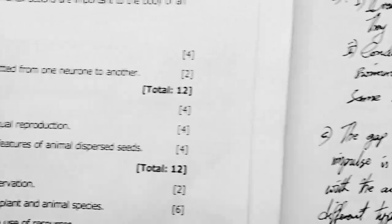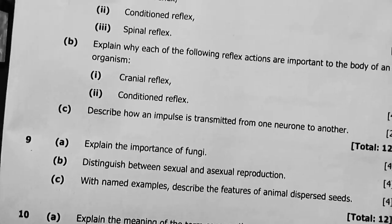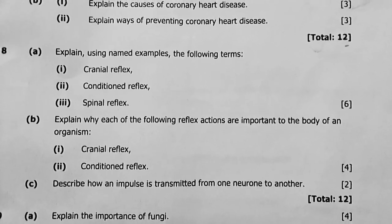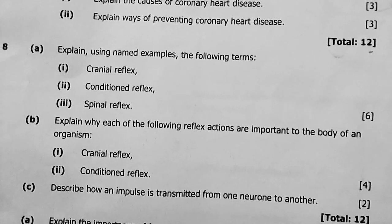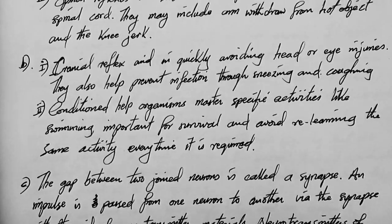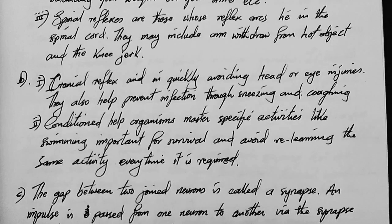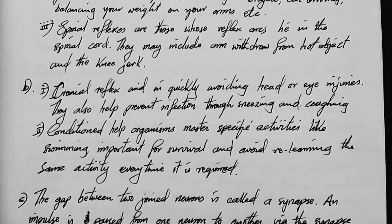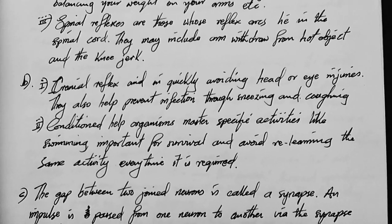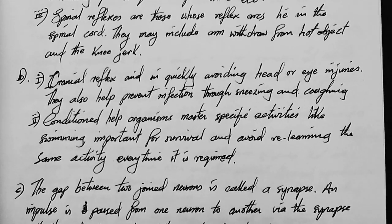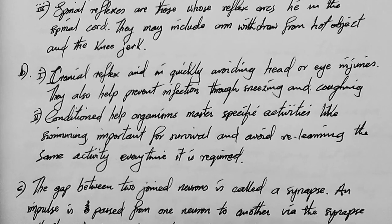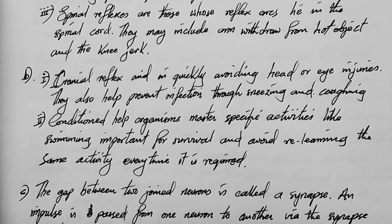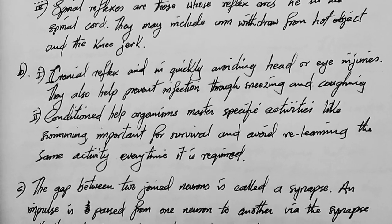Question 8b: explain why each of the following reflex actions are important to the body — cranial and conditioned. Cranial reflexes aid in quickly avoiding head or eye injuries and help prevent infection through sneezing and coughing. Conditioned reflexes help organisms master specific activities like swimming, which is important for survival, and avoid relearning the same activity every time it is required.